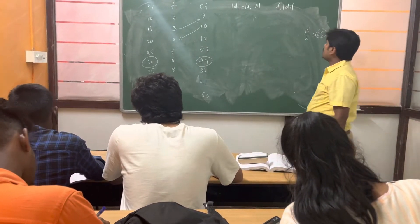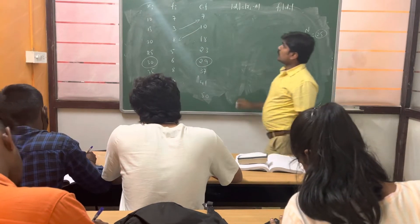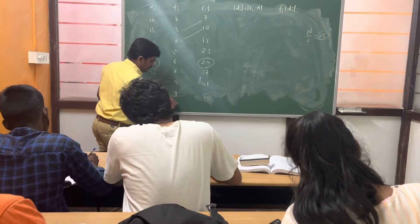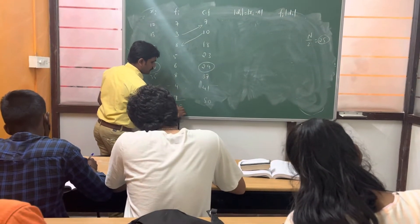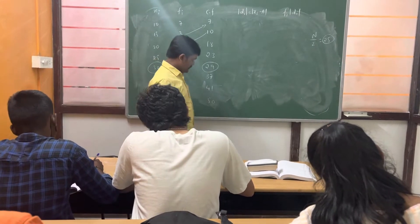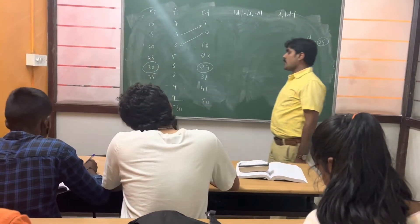Then, after finding the cumulative frequency, find out the summation of fi. See, what is the summation of fi here? 50. This is what N. The sum of the frequency is N. We are getting it as 50.